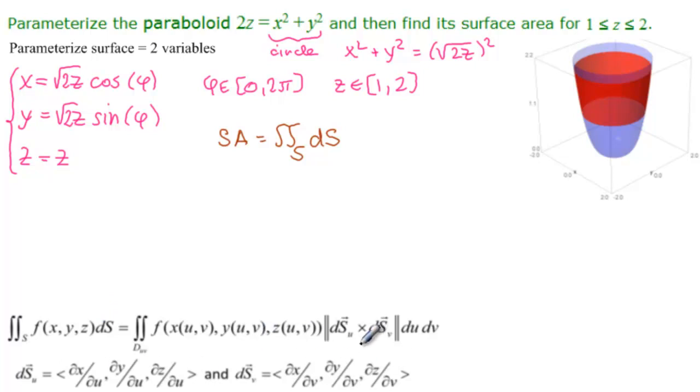This has u and v. We have phi and z. And the first thing we notice is that we don't have a function here. So this is just 1. We do need the gradient vectors here with the partial derivatives. And we need to find the partial derivatives, take the vector product, and then find the intensity. So let's start by finding the gradient vectors.